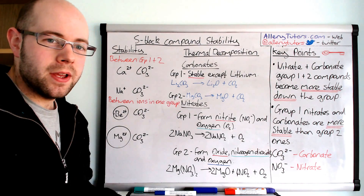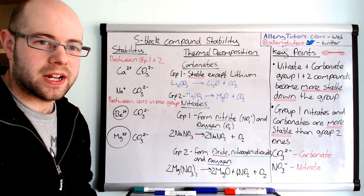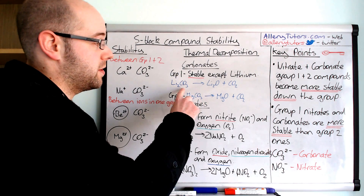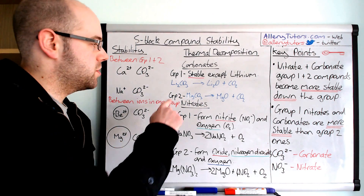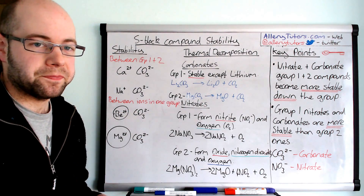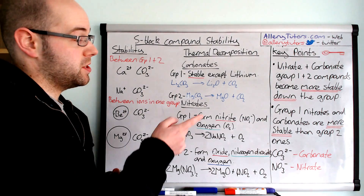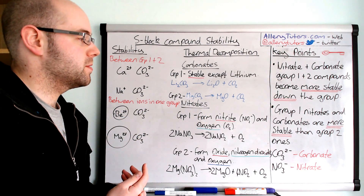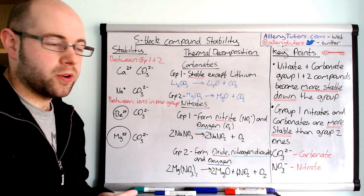There is an exception though, and that's lithium. Lithium has a really small ion in group 1 and has the ability to move electrons towards itself towards the cation, which weakens and makes the carbonate less stable. When we heat up lithium carbonate, Li2CO3, we form lithium oxide Li2O plus carbon dioxide. Group 2 carbonates are less stable than group 1 for the reasons explained. If we take magnesium carbonate and heat it — thermally decompose it — we always form an oxide and carbon dioxide. As a general rule, heating carbonates always forms an oxide and carbon dioxide.